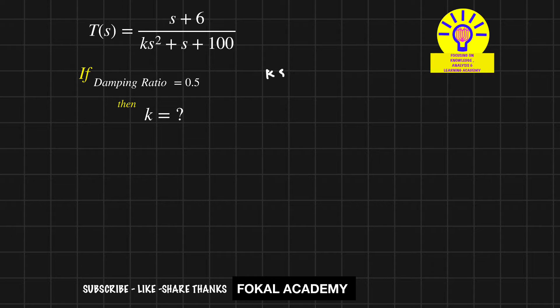The characteristic equation is ks²+s+100=0. Now make the s² coefficient equal to 1 by dividing both sides by k, so it becomes s²+(1/k)s+(100/k)=0.